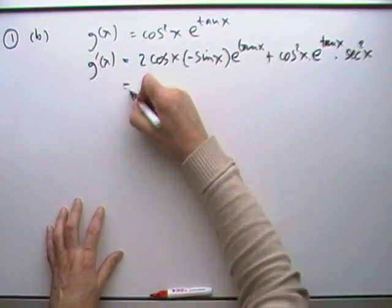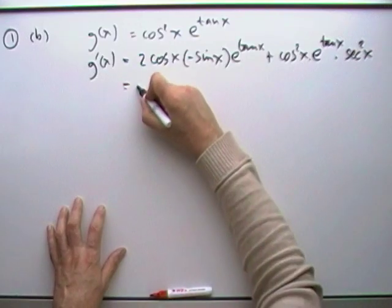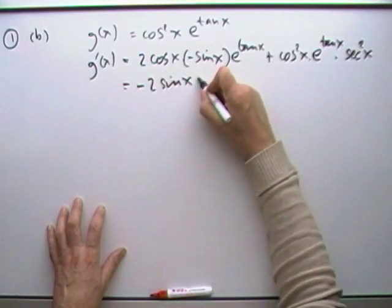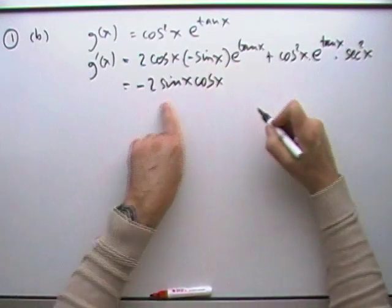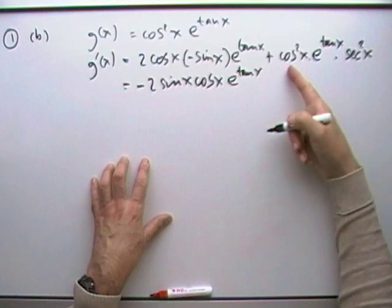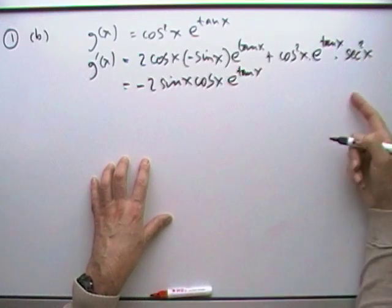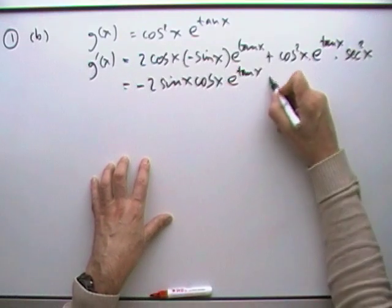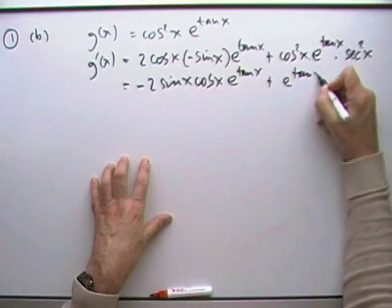That's handy, we'll just tidy this up. I've got negative 2, I'll just put it in the usual order, sine x cos x, to create that familiar phrase or saying, e to the tan x. But cos squared, sec squared is 1 over cos squared, so they'll cancel out, just leaving you e to the tan x.